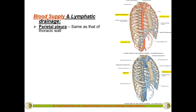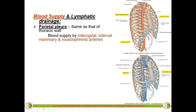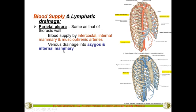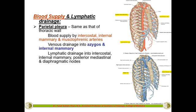Just like the nerve supply, blood supply and lymphatic drainage also depend on the contact of each pleural layer. The parietal pleura, being in contact with the thoracic wall, is supplied by the anterior and posterior intercostal arteries, the internal mammary artery, and the musculophrenic arteries for the lower part. Venous drainage is into the azygos vein and internal mammary veins. Lymphatic drainage is into the intercostal, internal mammary, posterior mediastinal, and diaphragmatic lymph nodes.